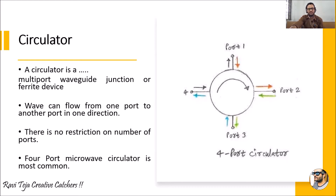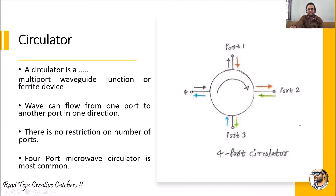The most commonly used microwave circulator is the four-port one. The diagram shown here is a four-port circulator which has port one, port two, port three, and port four. This four-port circulator is a microwave junction or a ferrite device used for transmission of microwave signals.